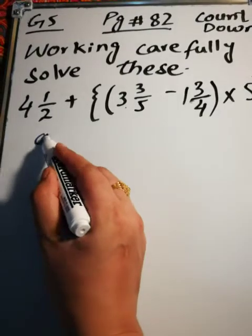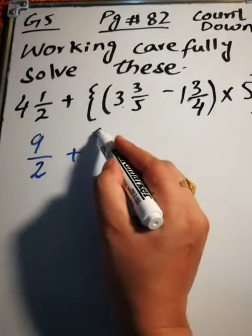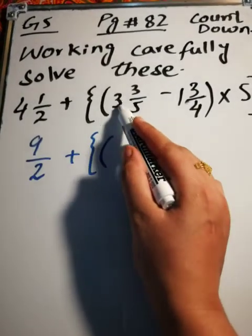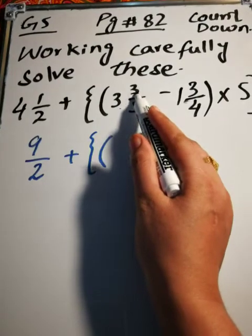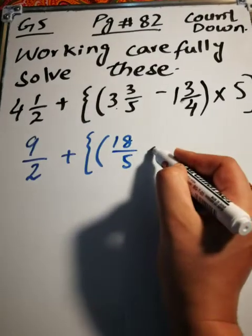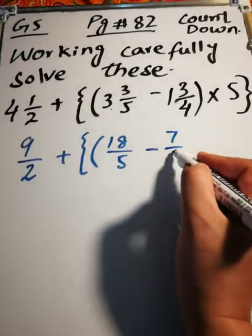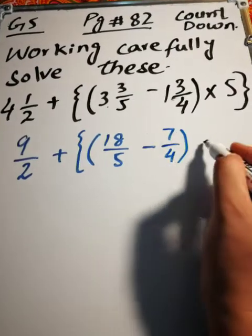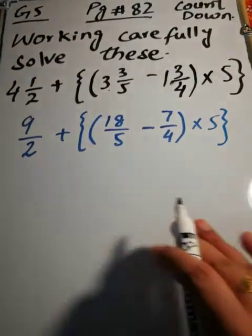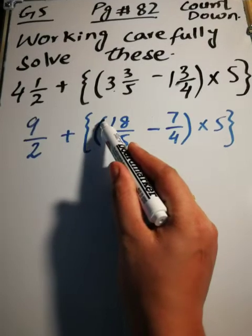So first we will change this to fractions. 8 plus 1, 9/2, plus bracket start, curly bracket, 5 times 3 is 15 plus 3, 18/5, minus 4 times 1 is 4 plus 3, 7/4, bracket close, multiply 5, bracket close. We know that first of all in this, we have to solve first the round bracket.